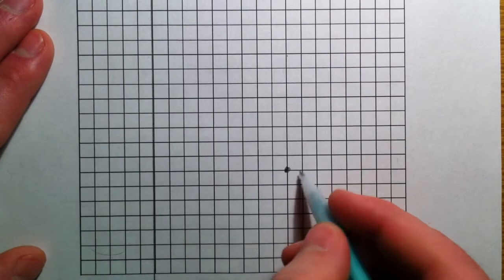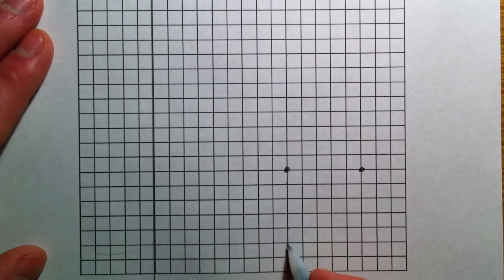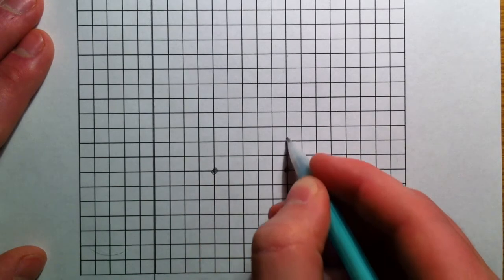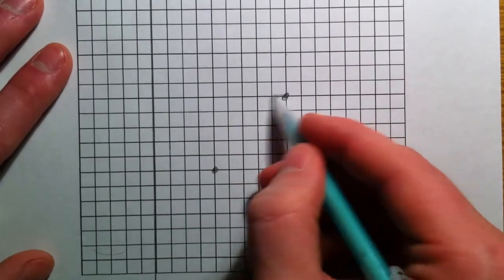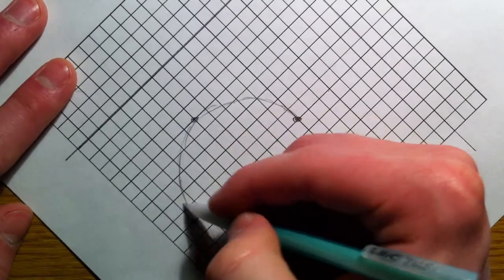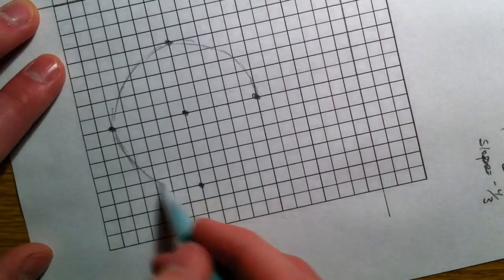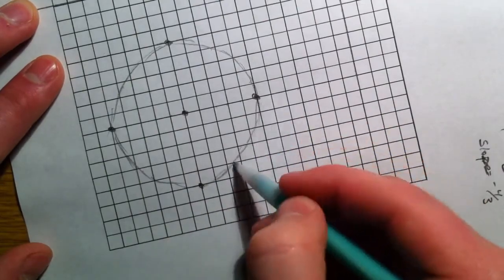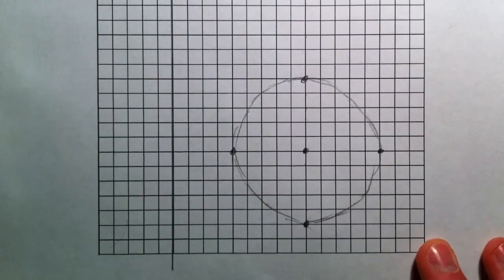So, 9, negative 12. Counting out 1, 2, 3, 4, 5 for the radius. It's tough because I'm not using a compass. And so, if you are actually doing this to get the intersection points, you might want to use a compass to be as accurate as possible.